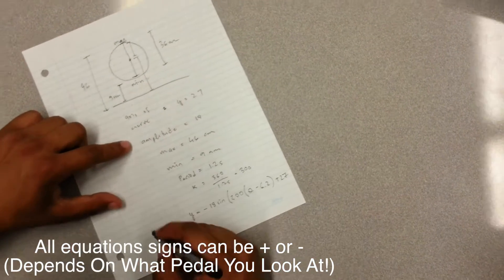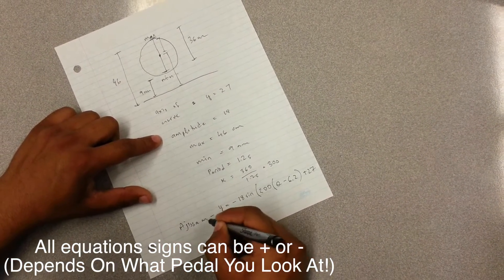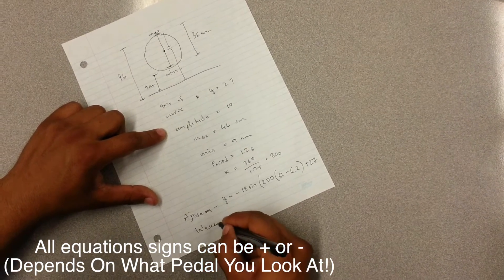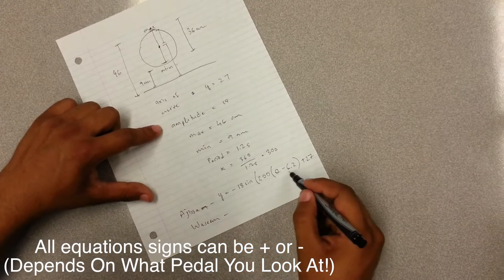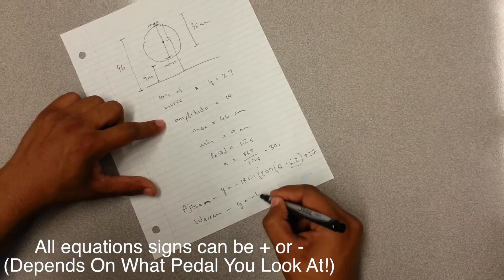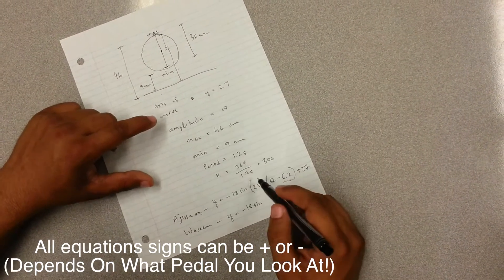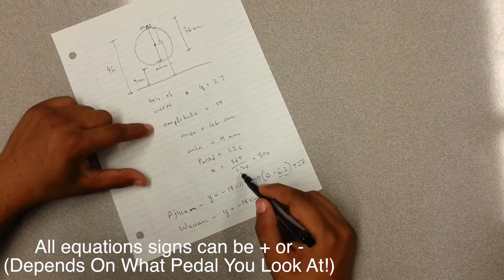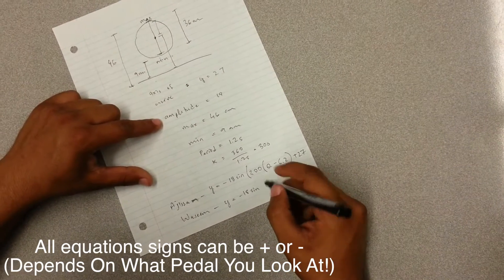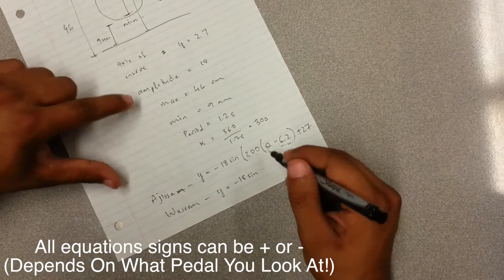If this is his sine equation, then I lost the race. So my equation would be the same except the period and the acceleration time. So my equation would be negative 18 sine. And when I became consistent, I was pedaling at 1.5 seconds every cycle, which is slower than his. So if you do 360 divided by 1.5 seconds, you get 240.